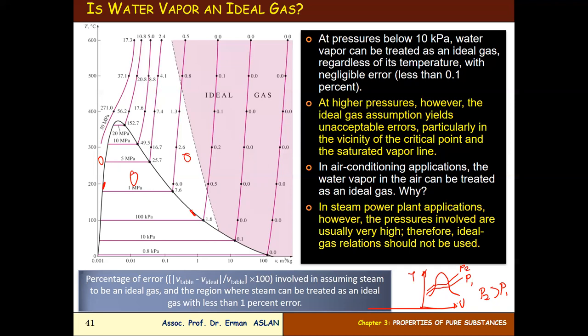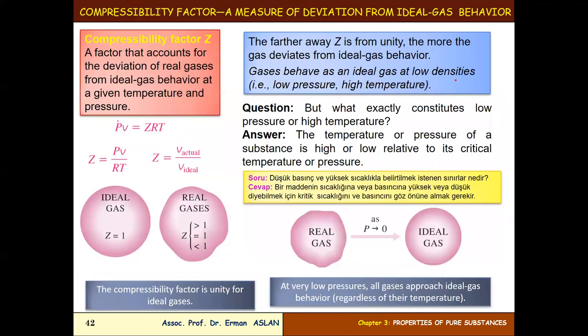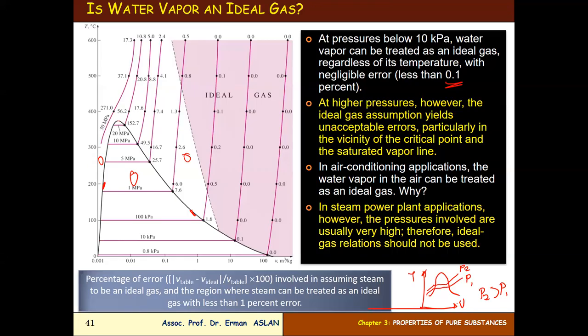At high pressure, the errors are much larger — not small like one percent. Also, in the critical region near the critical point and the saturated vapor line, water vapor or other substances cannot be treated as an ideal gas, particularly in the vicinity of the critical point.